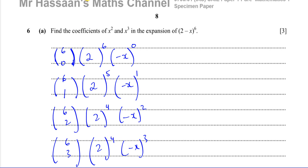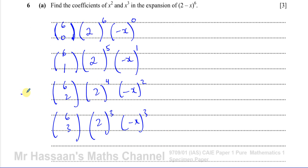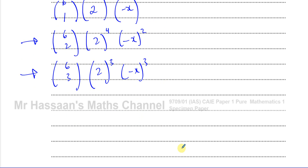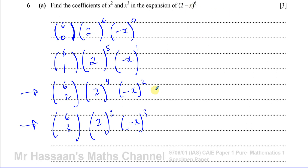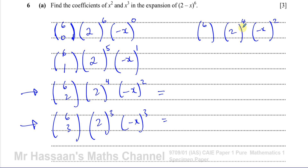These are the two lines I need to answer the question. I could have written them down immediately from the beginning. Notice that in each term the two exponents always add up to 6: 6+0, 5+1, 4+2, 3+3. So for the x squared term, the power on (−x) is 2, meaning the power on 2 must be 4. And since 6C2 equals 6C4, it doesn't matter which I use — they give the same answer.